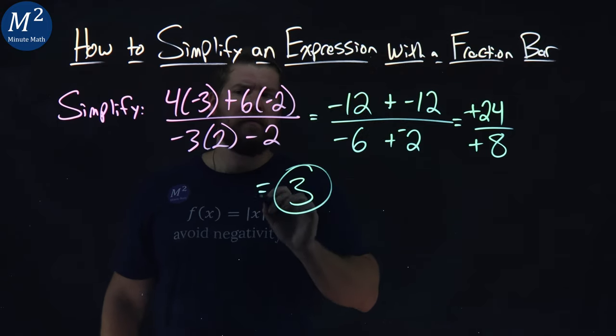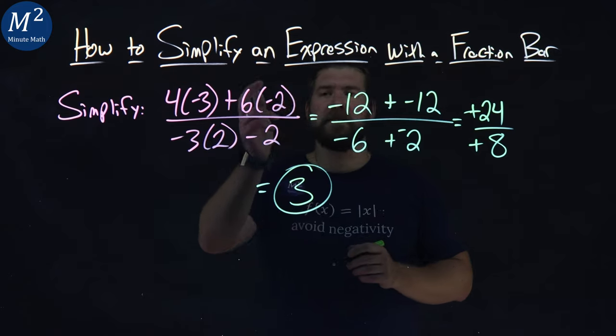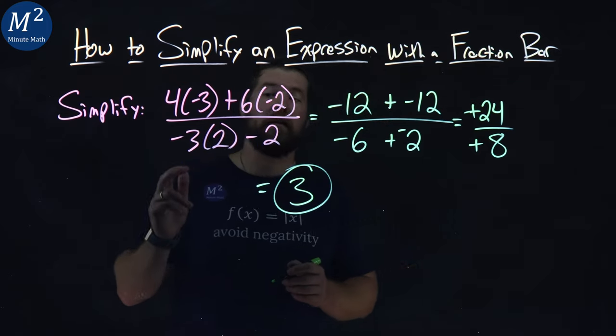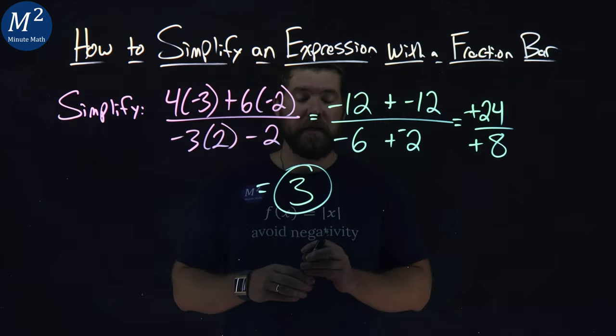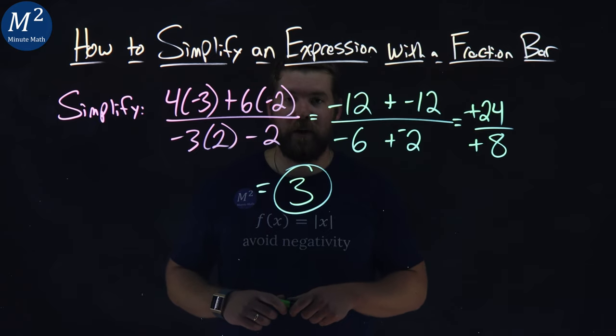And that's it. 4 times negative 3 plus 6 times negative 2 over negative 3 times 2 minus 2 simplifies to just be a positive 3.